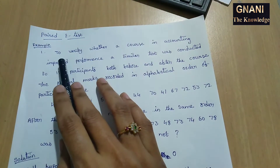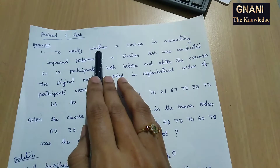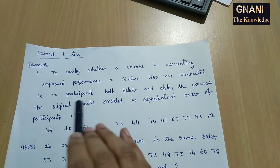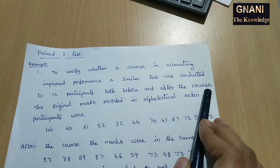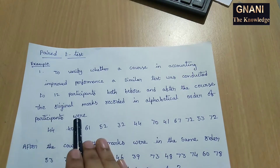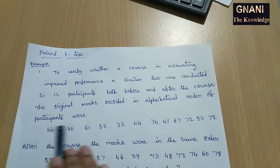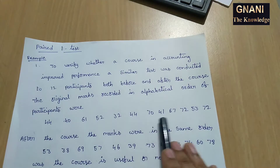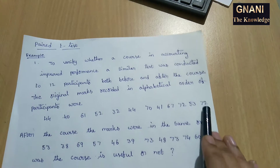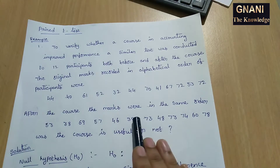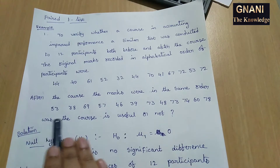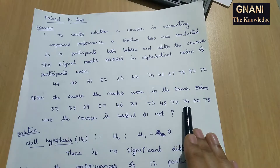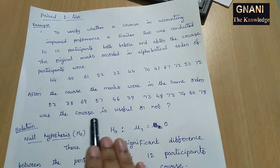Paired t-test example: To verify whether a course in accounting improved performance, a similar test was conducted for 12 participants both before and after the course. The marks recorded before the course were: 44, 40, 61, 52, 32, 44, 70, 41, 67, 72, 53, and 72. After the course, the marks were: 53, 38, 69, 57, 46, 39, 73, 48, 73, 74, 60, and 78. So was the course useful or not?